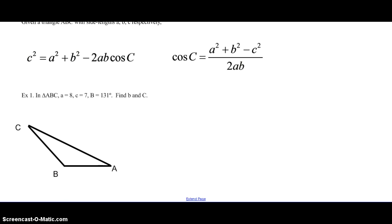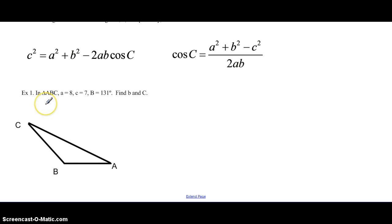We have our triangle ABC where they give us that a is 8, c is 7, and B is 131 degrees, and they want you to find b and c. Remember when they have triangle ABC, if it's not drawn for you, you might have to draw it in this order ABC. When you draw it, make sure your B makes sense to the picture. It's 131 degrees so it should be greater than 90 when you draw your picture.